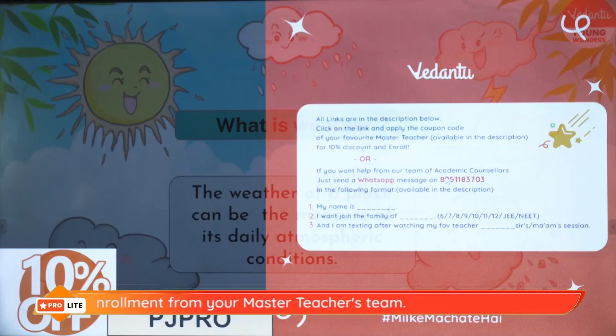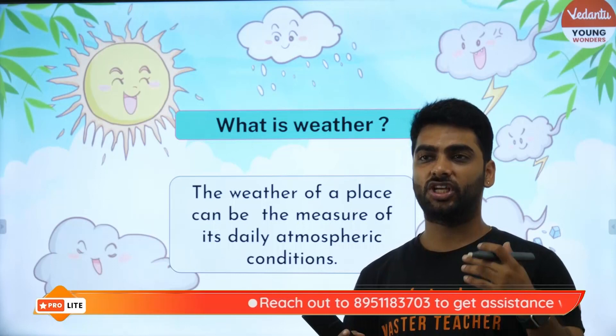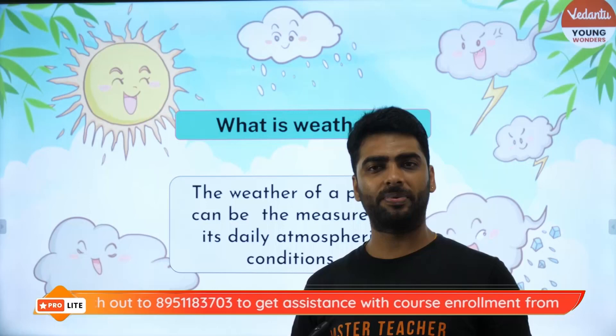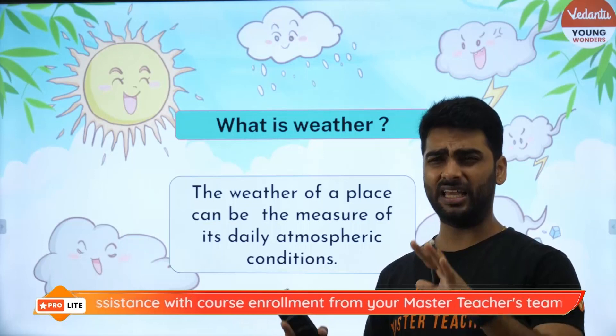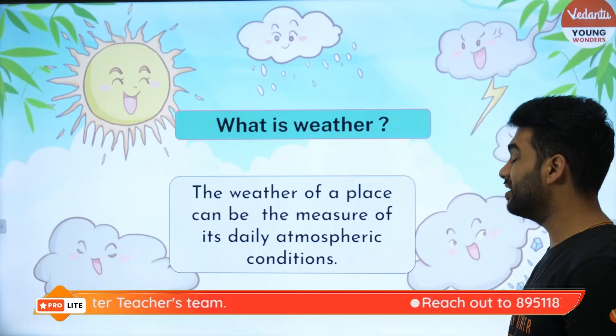Now we come back to the session. What is weather? Weather is the mausam ka hal — the atmospheric conditions you see on the news channel every day. It changes every hour. In Bangalore, for example, it may be sunny in the morning but raining by evening. The weather of a place is the measure of its daily atmospheric conditions — the daily direction of the wind, the daily temperature, the daily humidity, the daily rainfall — and these change every few hours.